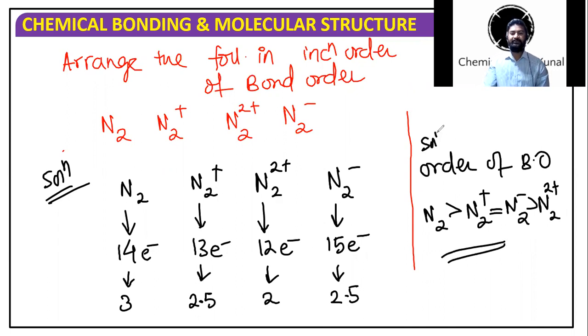That's how you can solve this question within 30 seconds. Just take the question, find the number of electrons. Just remember the values: 14 is 3, less than that 0.5 keeps decreasing by 0.5, and that's when you're going to get the bond orders within a few seconds. That's how you can do any bond order question that comes to your exam. So I hope this was helpful.